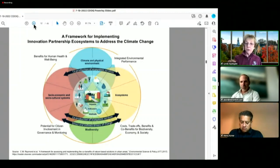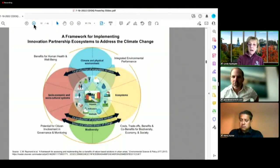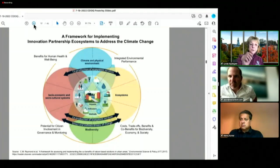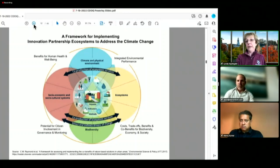This is some of the framework for how you think about those ecosystems. Integrated environmental performance, cost trade-offs, benefits and co-benefits for biodiversity, for economy and society, the potential for citizen involvement in governance and monitoring, and benefits for human well-being.